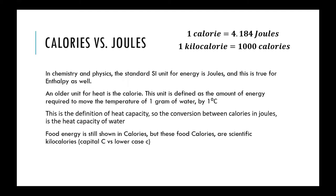In science and chemistry, the unit of energy is joules. An older unit still used in specific circumstances is the calorie. It's defined as the amount of energy needed to raise one gram of water by one degree Celsius — exactly the heat capacity for water. One constant worth memorizing is the heat capacity of water, which is also how to convert calories to joules: 4.184 joules per gram per degree Celsius.